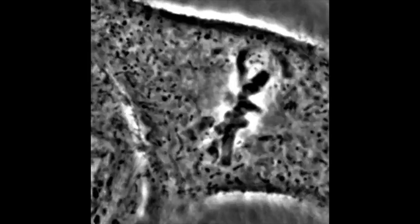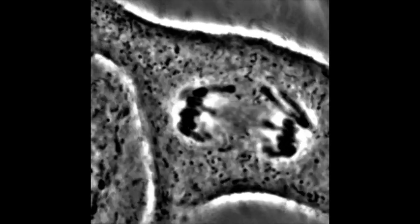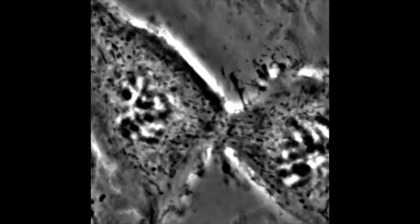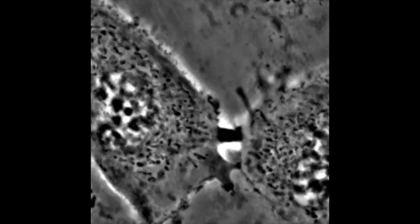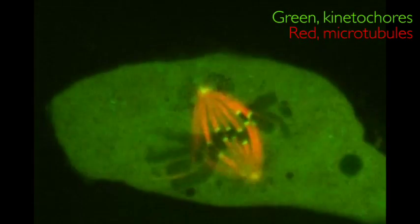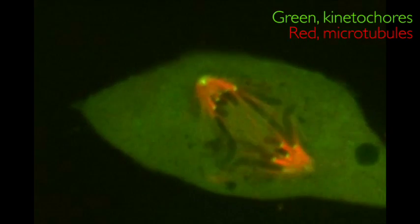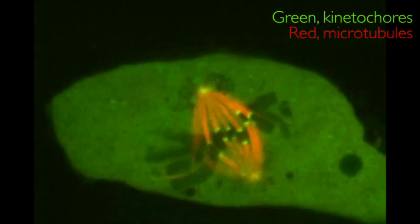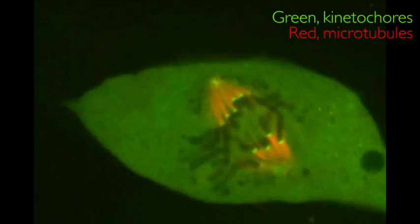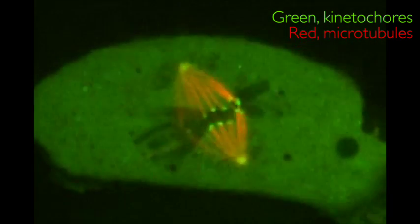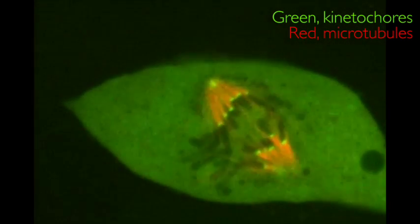The condensed chromosomes move around like an excited crowd in the center of the cell, until they are lined up in the middle. Then, quite suddenly, the sisters split apart and move to opposite sides of the cell, while the cell pinches in the middle to form two daughter cells. But how do chromosomes move? The microtubules of the mitotic spindle, shown in red in this video, find the chromosomes at attachment sites called kinetochores, shown in green, and pull the chromosomes back and forth like two teams struggling in a game of tug-of-war.